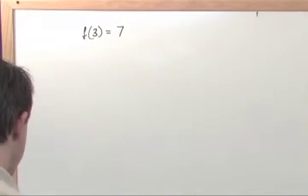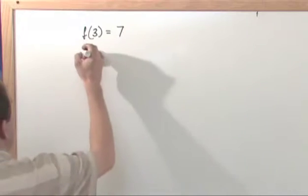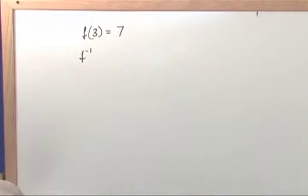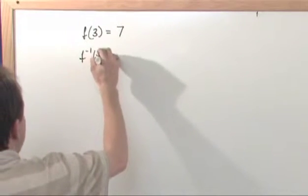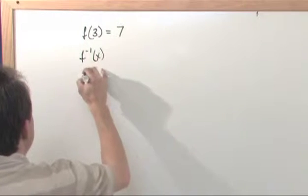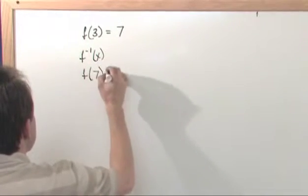Okay, then the inverse written as f to the negative 1 like this. Okay, that would be called the inverse has the property that f inverse of 7 is 3.